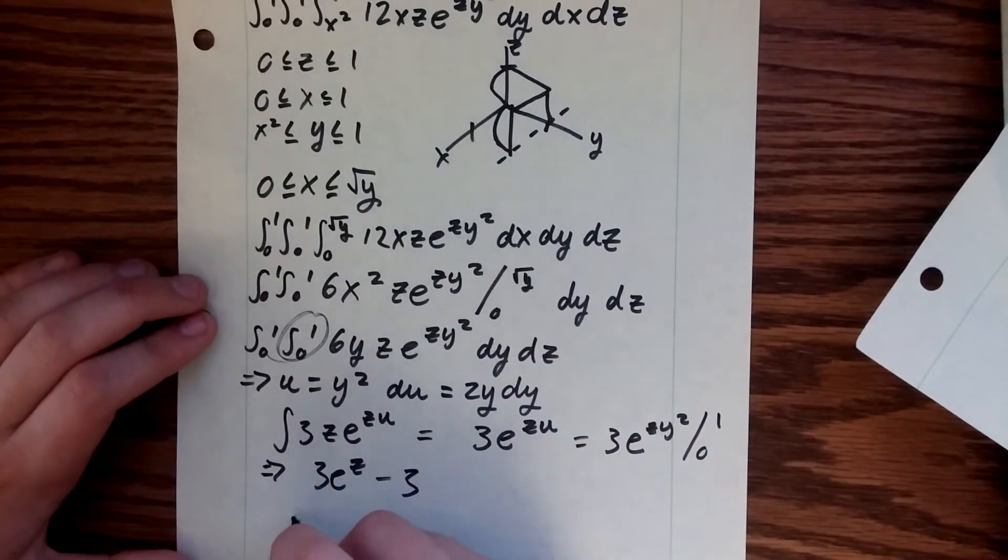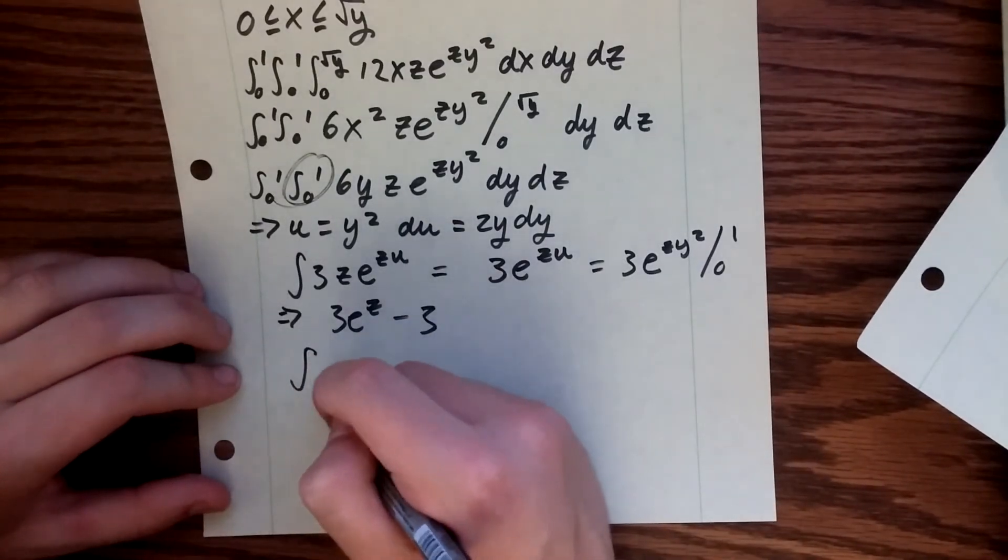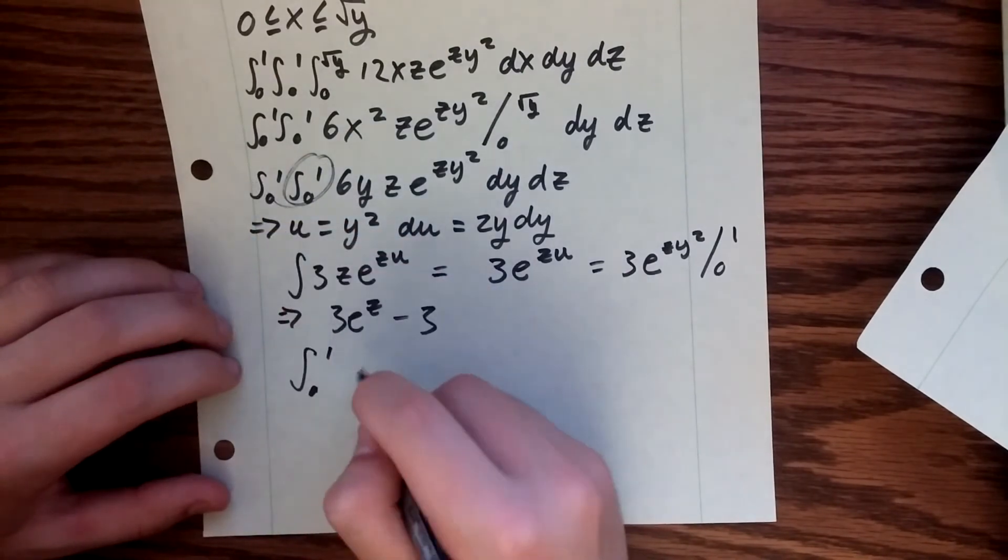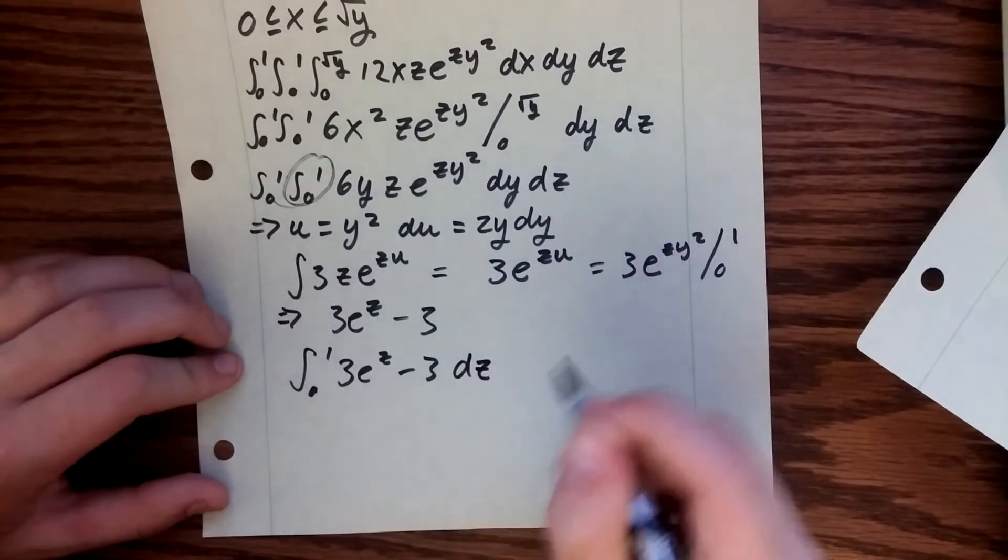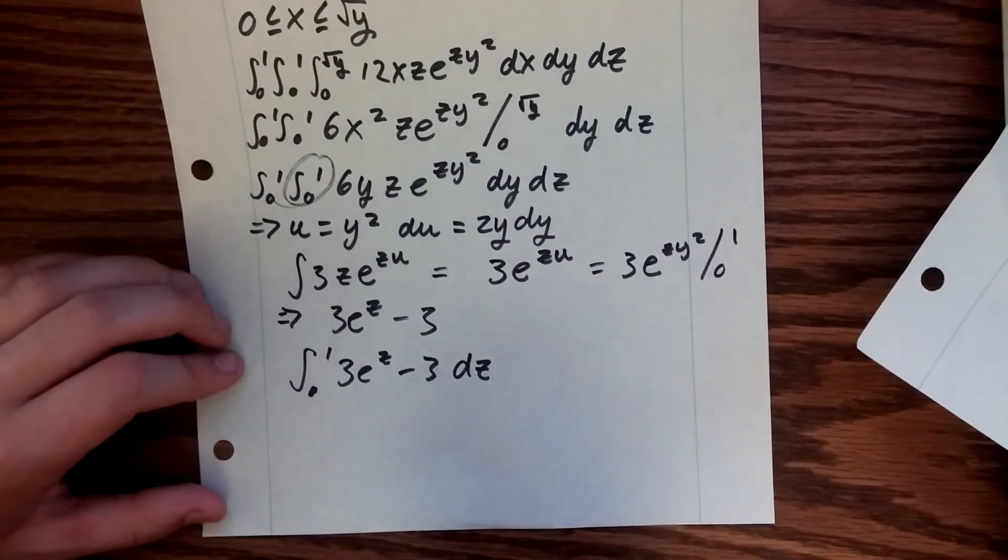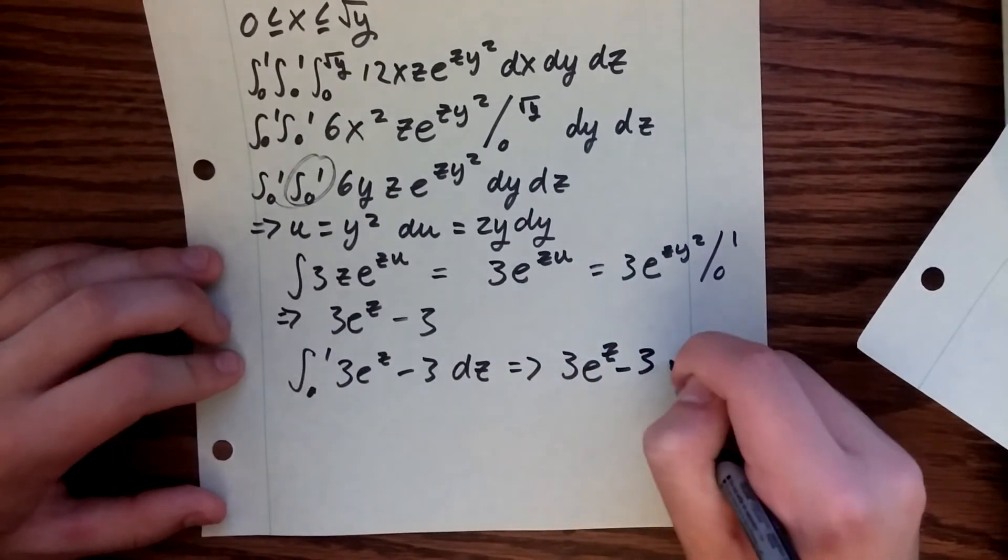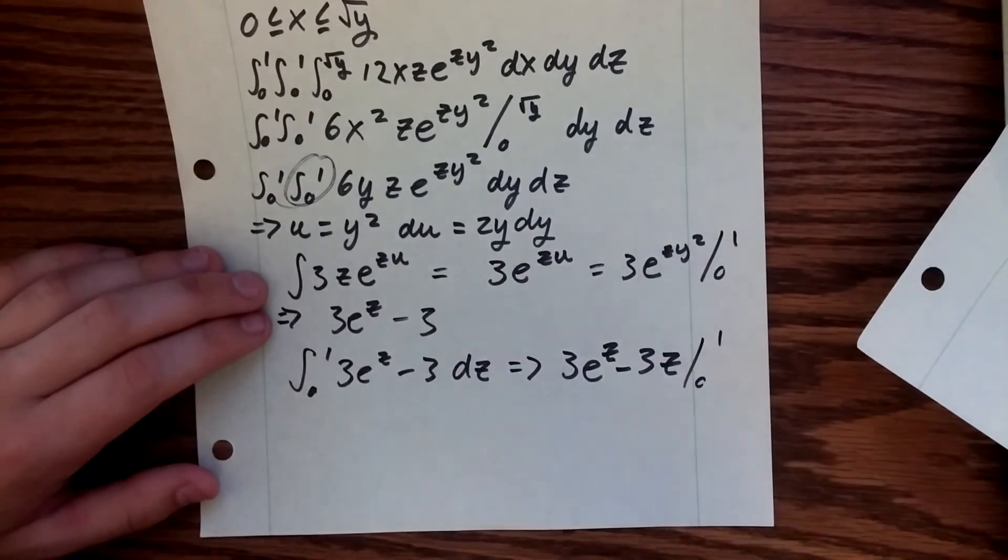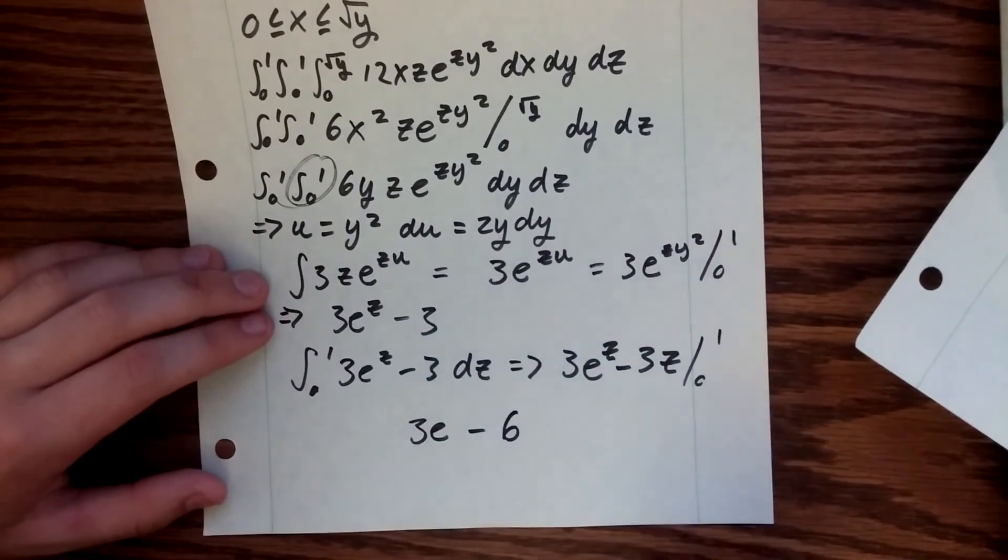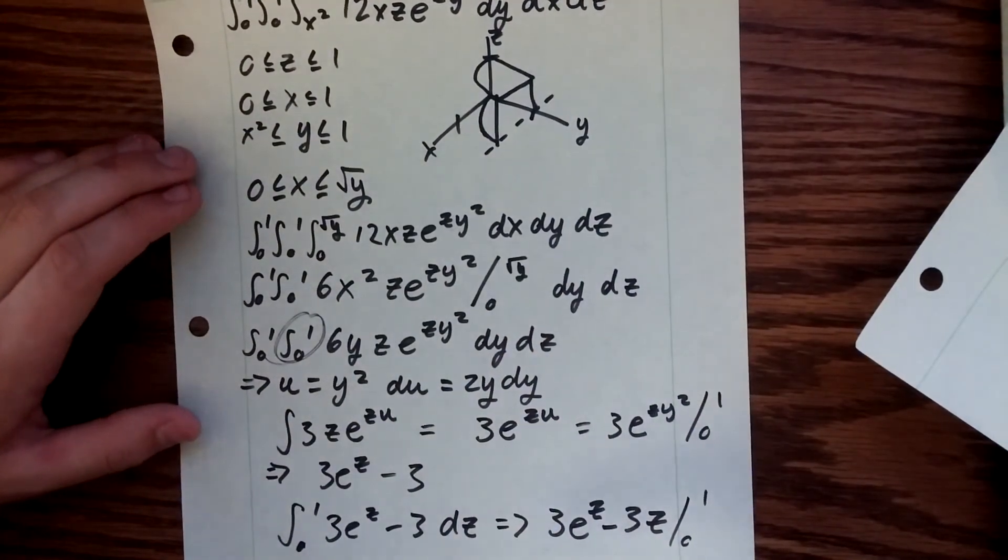So going on to our final integral evaluation, we have our bounds there, and then we integrate this 3e^z minus 3 dz, a fairly simple integral. Then you evaluate this expression from 0 to 1 and you end up with 3e minus 6. And that's how changing the order of integration can make your life a lot easier in some situations.